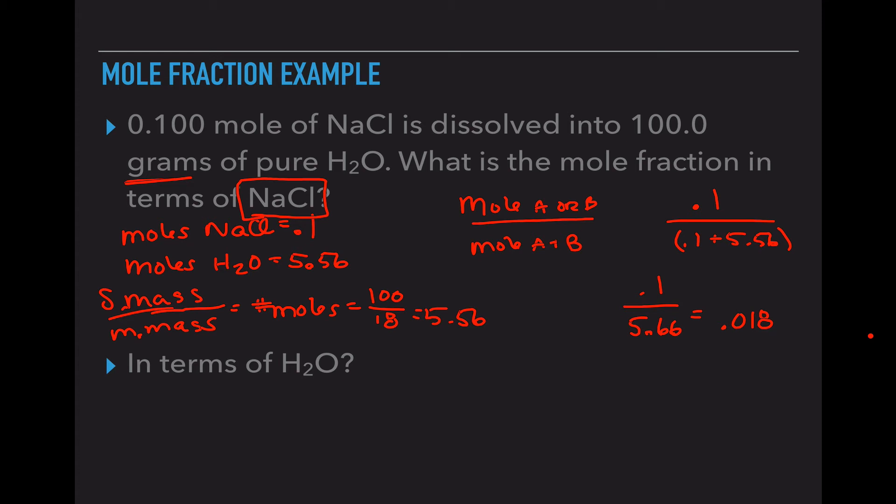There are no units, so you don't have to put any terms after that. Finally we are going to write the same thing, but now in terms of H2O. We are going to use the same equation: mole A or B divided by mole A plus B. But now we want water on the top of that fraction bar, so I am going to put 5.56, which is the moles of water. On the bottom I am going to put this total that we found already in the previous problem, which is 5.66. When we divide that out, we have a value of 0.982 as our amount. So the mole fraction of NaCl in this scenario is 0.018, and the mole fraction of H2O is 0.982.